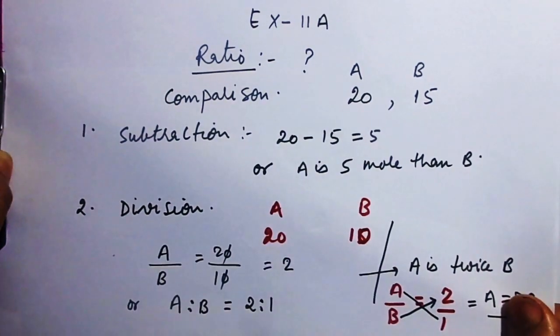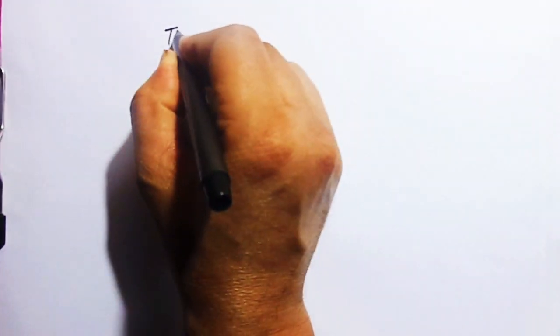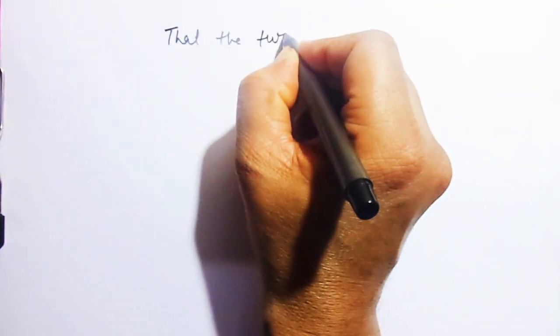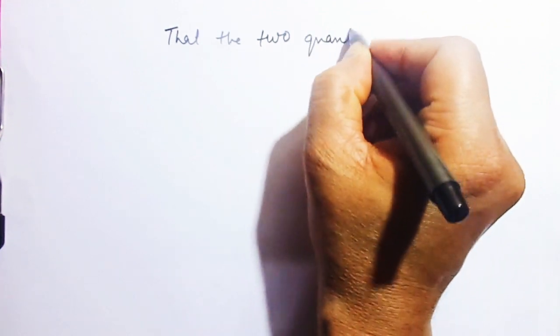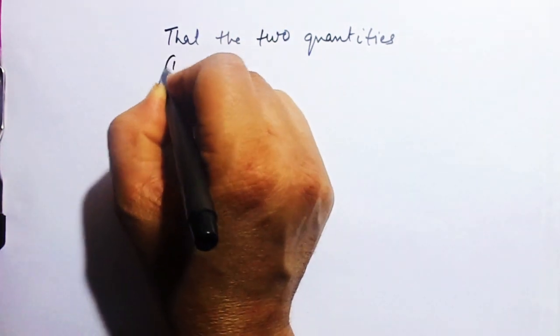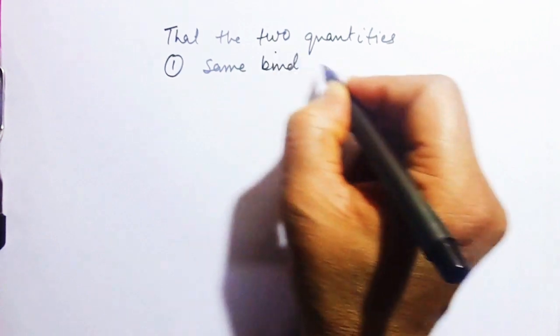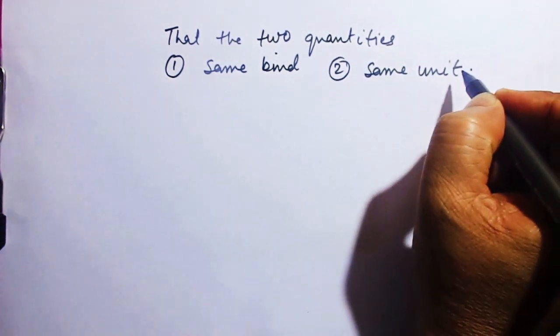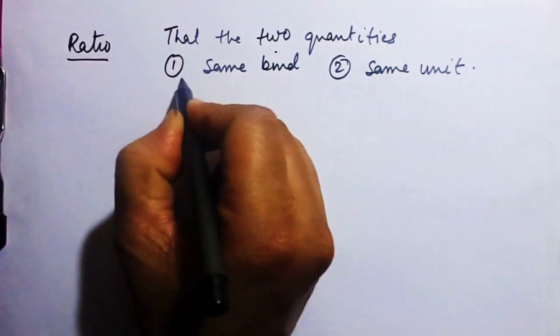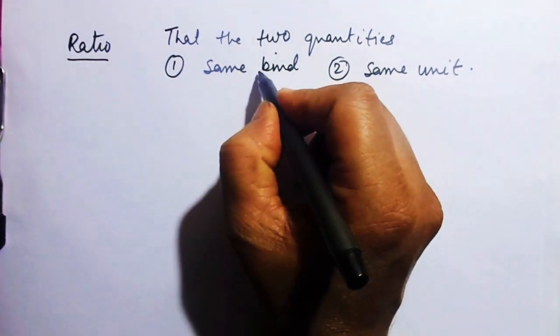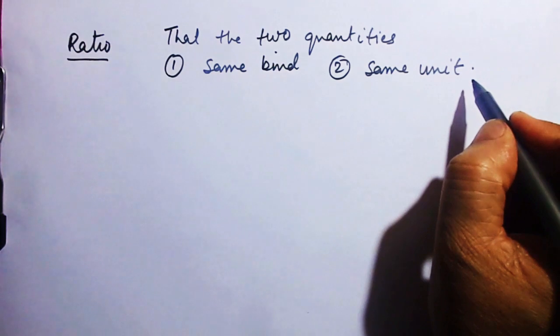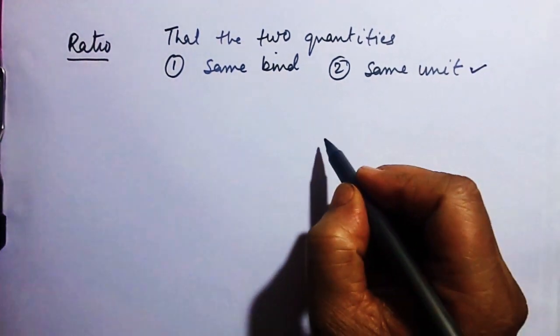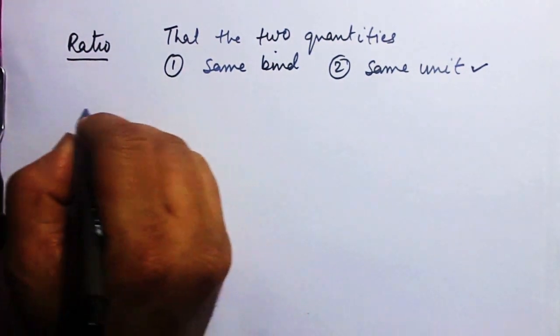Whenever you talk about ratio, remember only two things: the two quantities should be of the same kind, and secondly they should have the same unit. From now onwards remember these two rules — same kind and same unit. If the units are not the same, you will have to make their units the same.